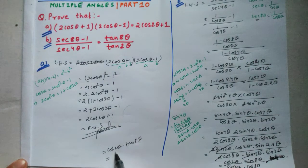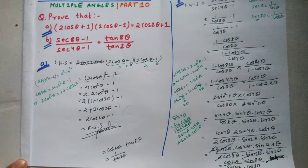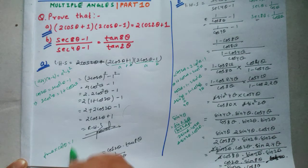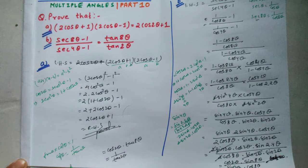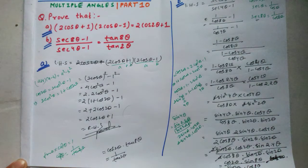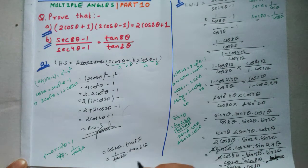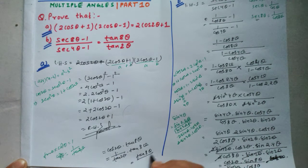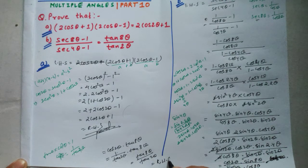Using the reciprocal formula, tan2θ × cot2θ = 1. We get tan8θ / tan2θ, which equals the RHS. Hence proved.